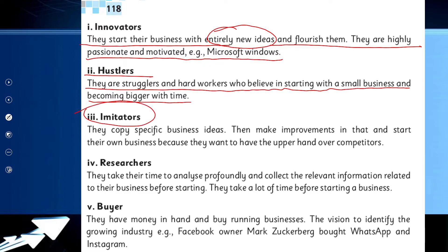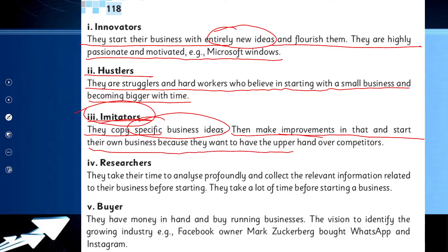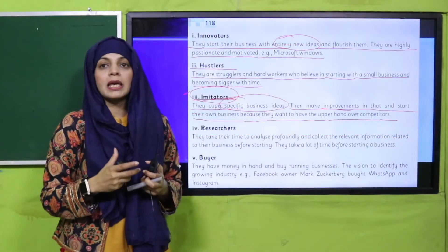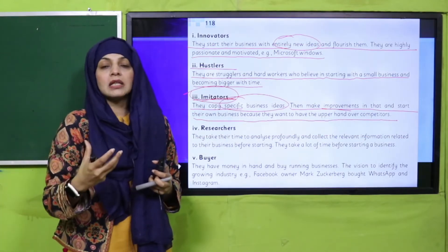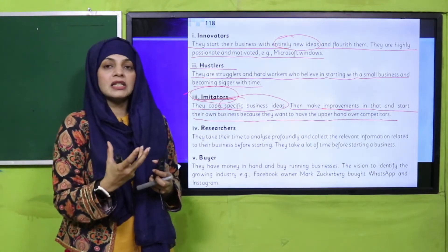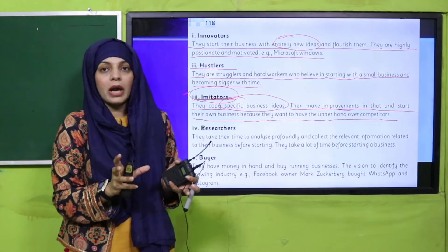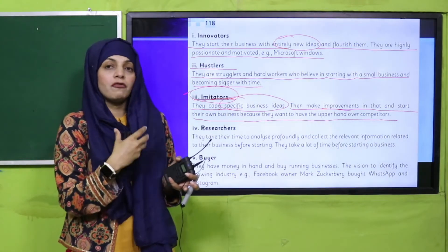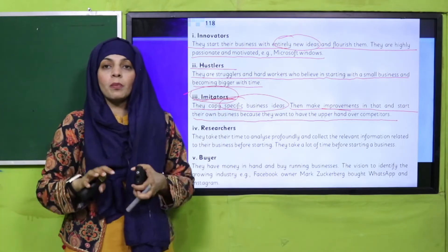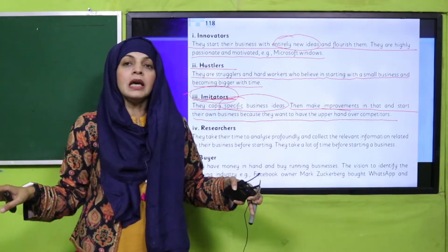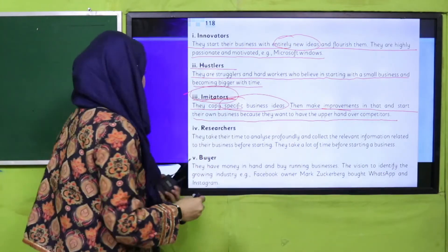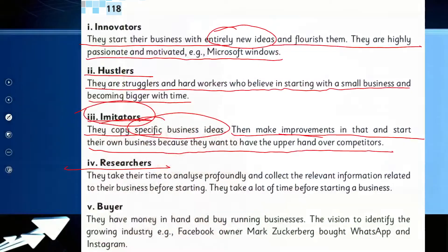Then come the imitators. Imitator means to copy — imitation means copying someone. So who are imitator entrepreneurs? They copy specific business ideas, then make improvements in them, and start their own business because they want to have the upper hand over competitors. Imitators take pre-existing business ideas, bring innovations within them, add new things, make them better, and then float their idea and start their own business to show they are better than their competition in the market.